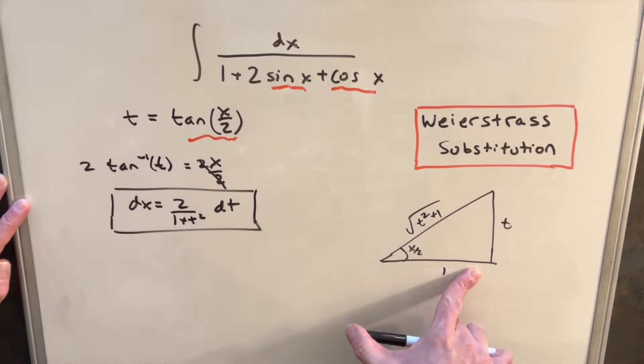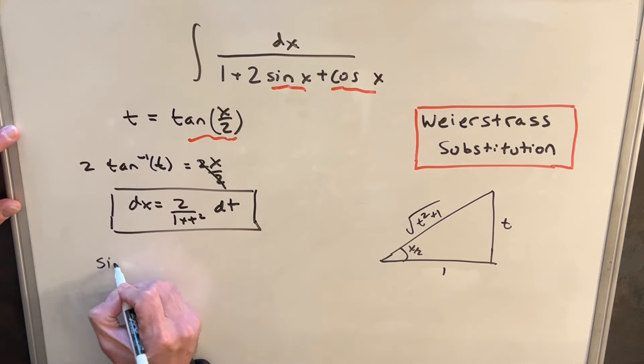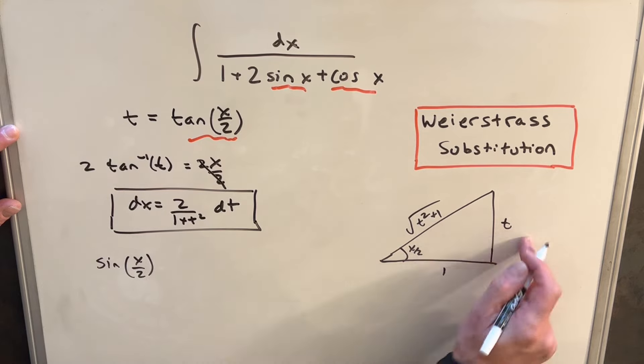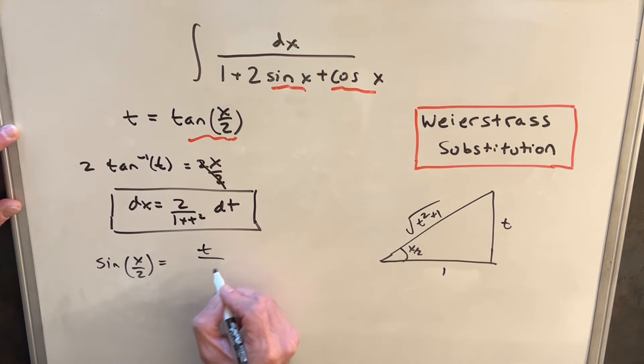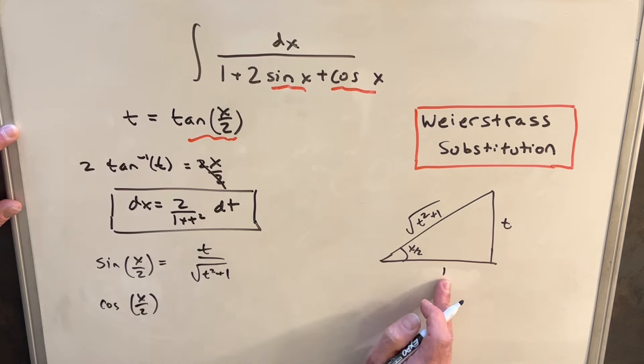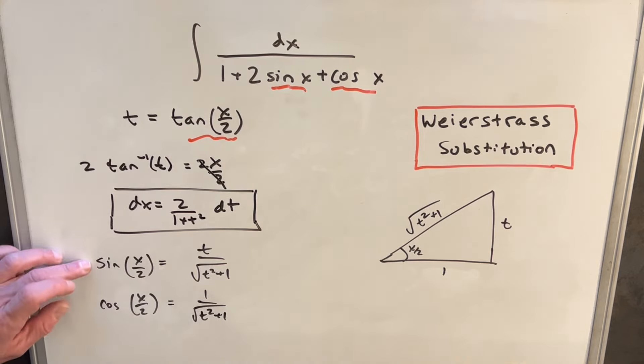So then what this allows us to do, it allows us to get sine and cosine, but in terms of the half angle. So our sine of x over 2 is going to be opposite over hypotenuse, so that's going to be t over square root of t squared plus 1. And then for cosine x over 2 in our triangle, we just have 1 over square root of t squared plus 1. Okay, so that's good that we have all of our major trig functions, but we don't have the right angle. We're doing in terms of x over 2.